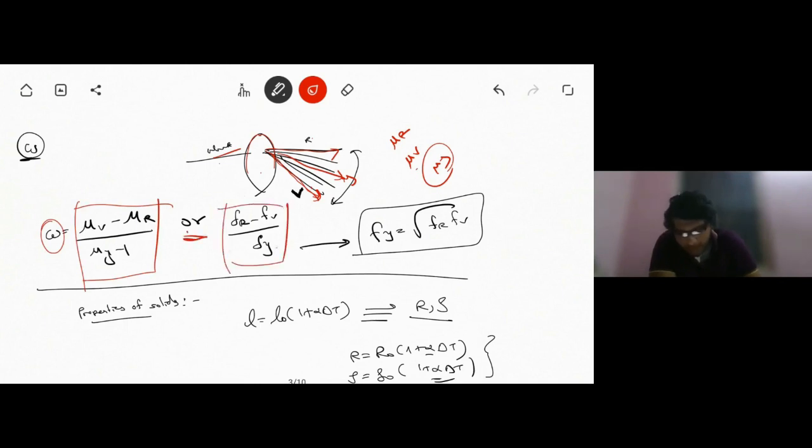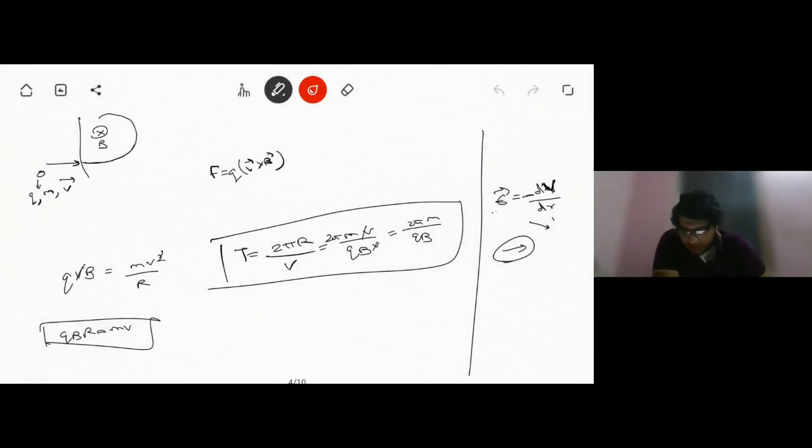Next, in properties of solids, there's a basic formula: beat length, beat area, beat volume, they are all given in the same context. For length it is alpha, for area it is beta, and for volume it's gamma. For a uniform body, the same thing can be applied to resistance and resistivity as well, where this is the coefficient of resistance change with respect to temperature.